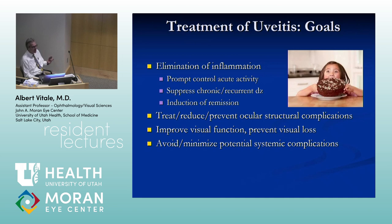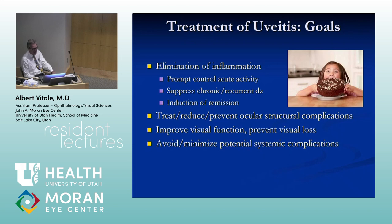The goals of treatment: we want to eliminate inflammation with prompt control of acute activity, suppress chronic or recurrent disease, and attempt to induce remission, which is difficult in a lot of cases with uveitis. We want to prevent and reduce ocular structural complications which can interfere with vision, such as cataract, macular edema, scarring, chorioretinal scars, and to minimize potential systemic or ocular complications of therapy.